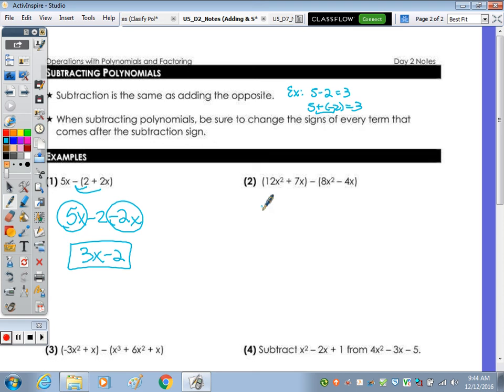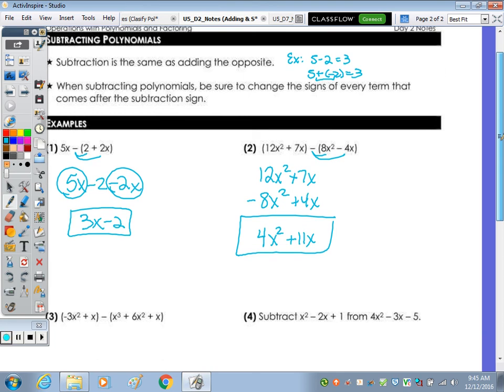The next one, 12x squared plus 7x. We can just copy it down because there's no sign in front. And then distribute the negative through. And if you want to stack, put it underneath, be negative 8x squared, negative times negative, positive 4x. Combining straight down, 12 minus 8 is 4, keep the x squared. 7 and 4 is 11. So you can write it left to right or stack just as we did with addition.